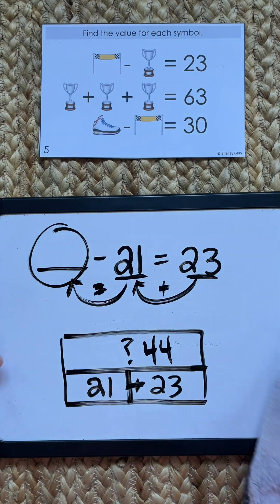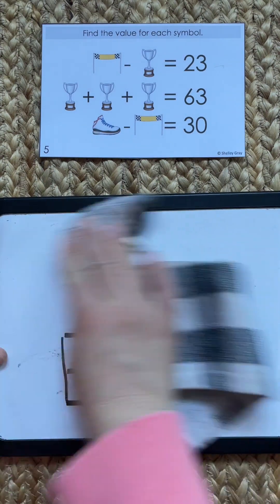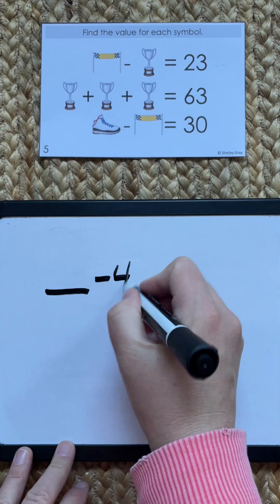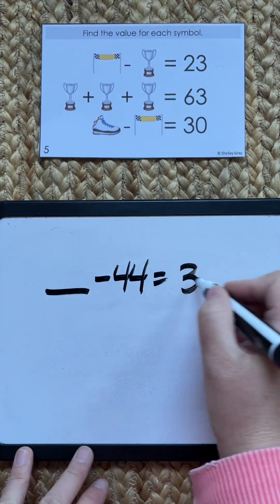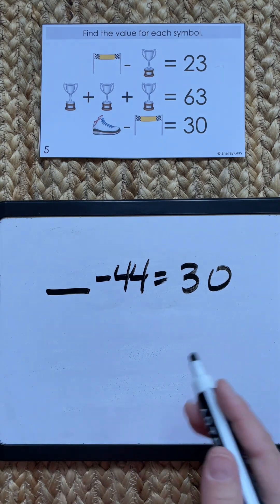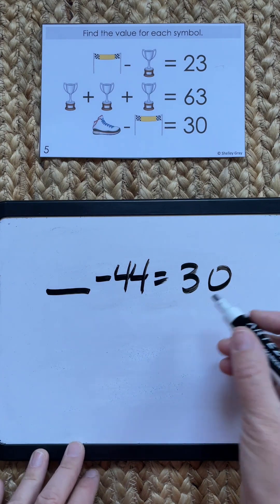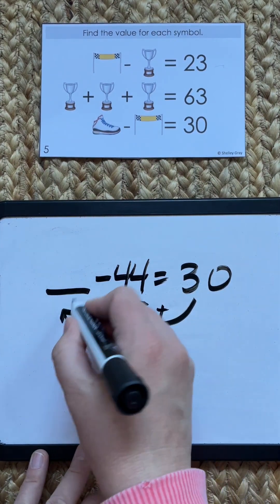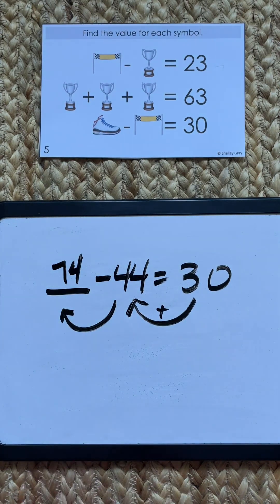Okay, so now we know the flag, we know the trophy, now we just need to solve for the shoe. So we know that something subtract 44 is going to give us 30. Some of your students who are already understanding the inverse relationship between addition and subtraction will easily see that all we need to do here is 30 plus 44 to give us 74.